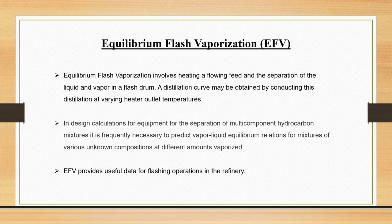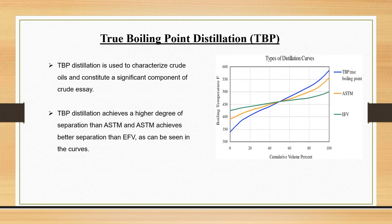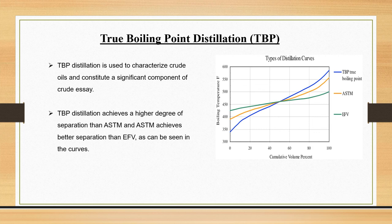Now we will discuss True Boiling Point distillation, which is a concern topic because the study of cut point belongs to this topic. TBP distillation is used to characterize crude oils and constitutes a significant component of crude assay. In the graph, we can see that the TBP curve is above ASTM and EFV for cumulative volume percentage of around 45, and it achieves a higher degree of separation than ASTM, which is further better than EFV. So the best method for characterization is the TBP curve.